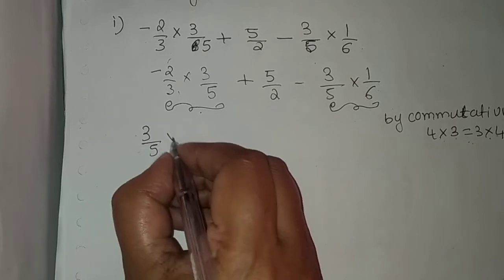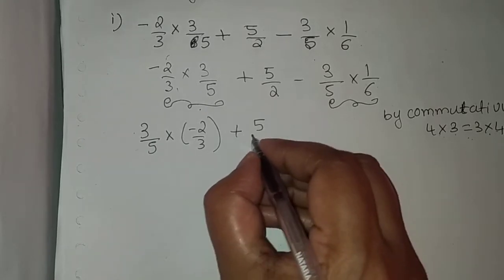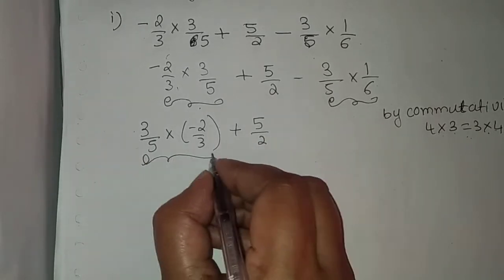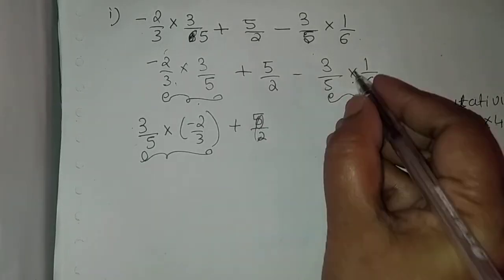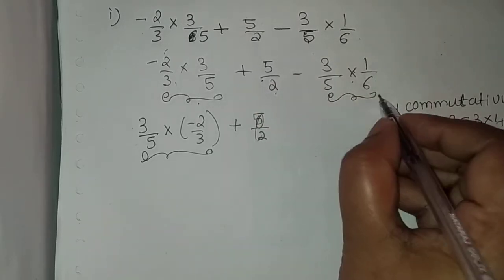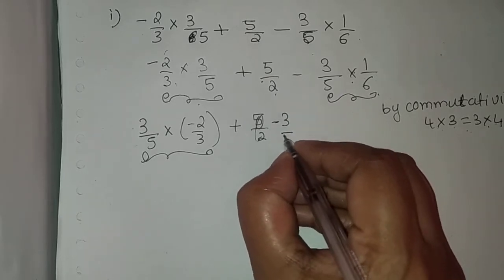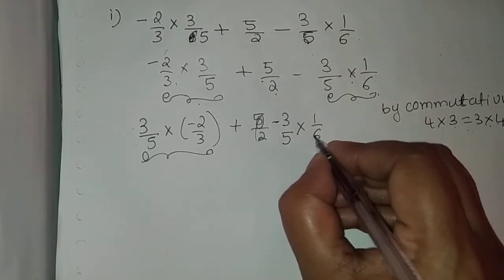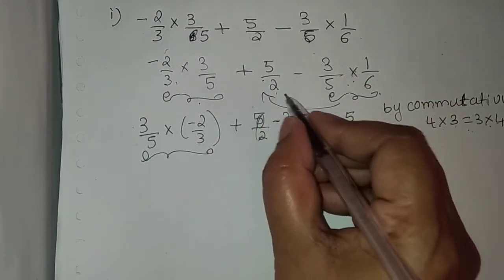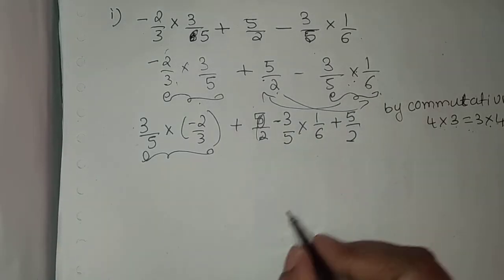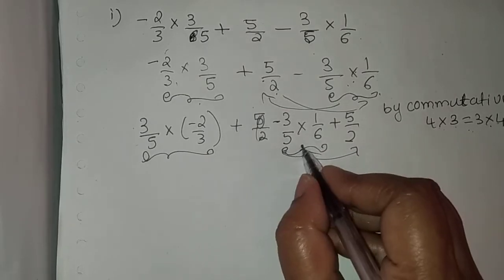We write 3/5 × ... these two are interchanged, minus 2/3, and 5/2 remains as it is. These two are interchanged, and again these two are interchanged — that is, minus 3/5 × 1/6, plus 5/2. This whole thing is interchanged with 5/2.